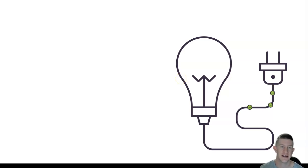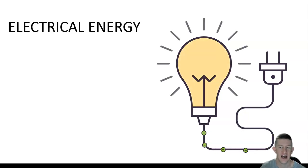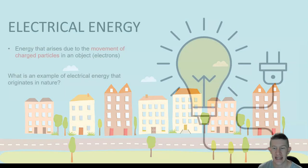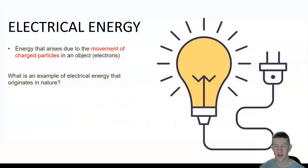The next type is electrical energy, which is all about charges. Electrical energy arises from the movement of charged particles, and in electricity those charged particles are electrons. What's an example of electrical energy that originates in nature? The answer is lightning. We would see lightning and static charge when you scuff your feet along the carpet and zap someone.